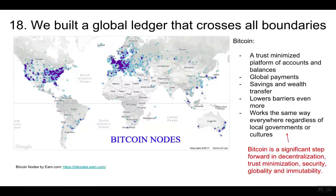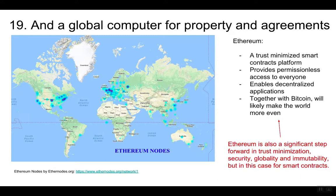We built a global ledger that crosses all boundaries. Bitcoin is a significant step forward in decentralization, trust minimization, security, globality, and immutability. And the global computer for property and agreements — Ethereum is also a significant step forward in trust minimization, security, globality, and immutability, but in this case for smart contracts.